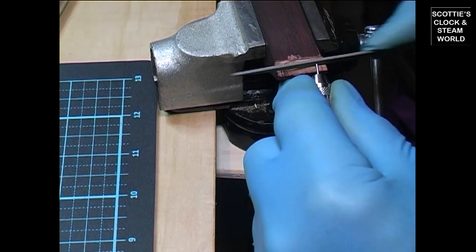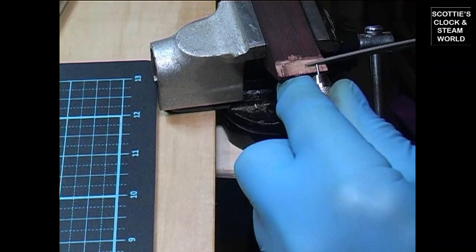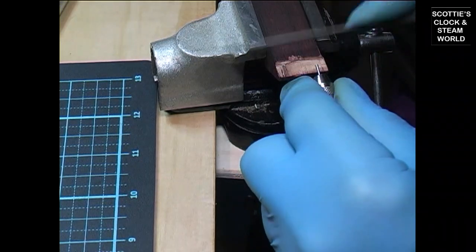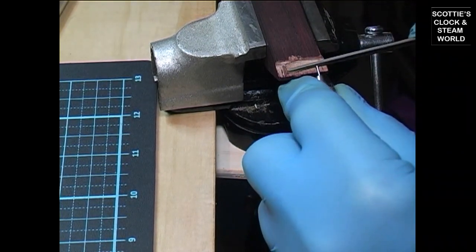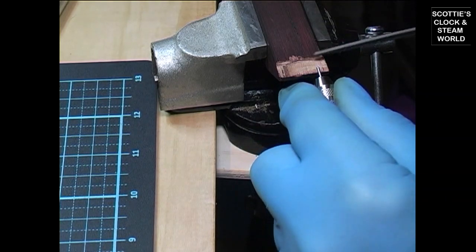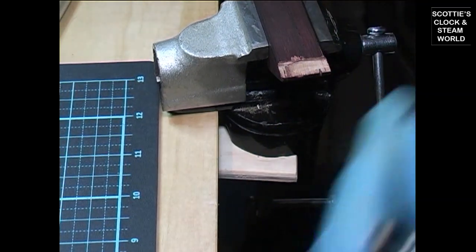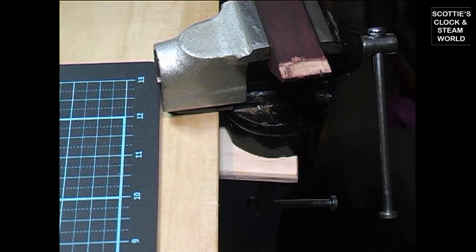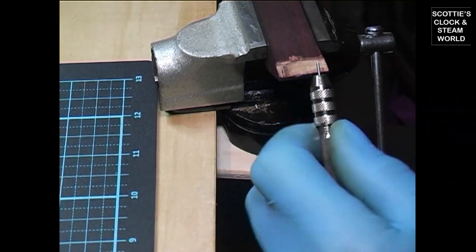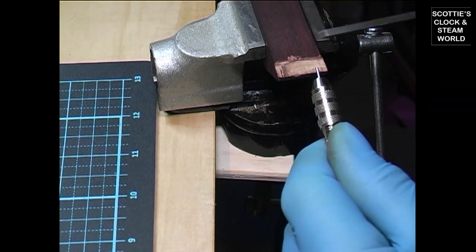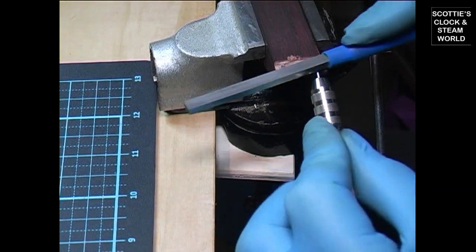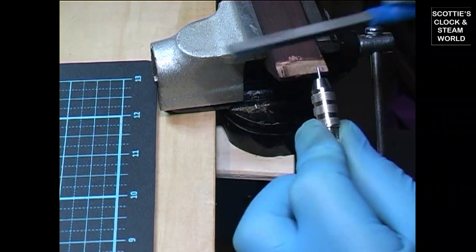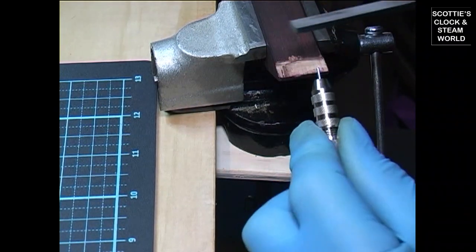Square off the end of the pin. Using the pivot file, slowly remove the material from the top of the pin.